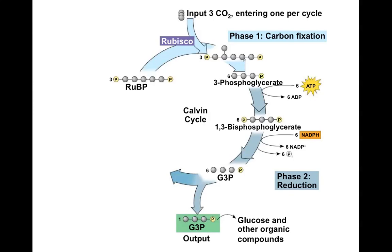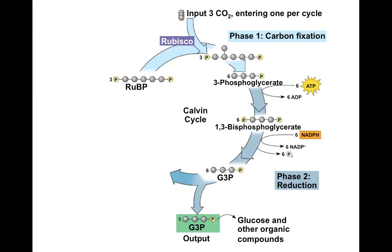Those six three-carbon molecules get phosphorylated — giving them more potential energy — going from 3-phosphoglycerate to 1,3-bisphosphoglycerate, which has phosphate groups at both ends. Next we reduce the 1,3-bisphosphoglycerate by absorbing electrons from NADPH and losing some phosphate groups to get six molecules of G3P, which is glyceraldehyde 3-phosphate. The carbon in these molecules now has more potential energy.